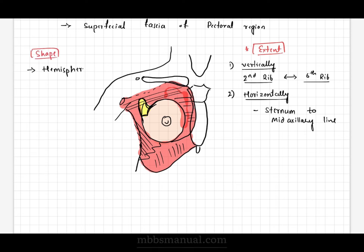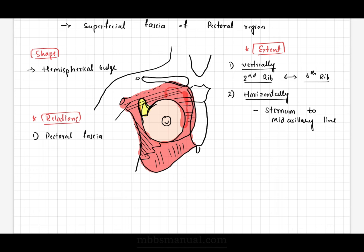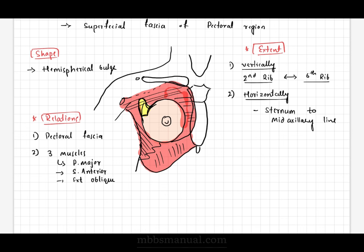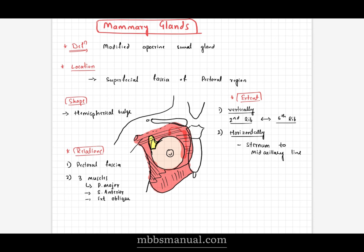Shape of the gland: usually it is a hemispherical bulge. Regarding relations of the gland, the deep aspect of the breast is related to the following structures: the pectoral fascia, and three muscles — pectoralis major muscle, serratus anterior, and external oblique muscle.